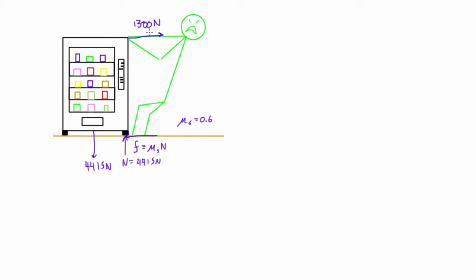In this case, our normal force — really the maximum normal force — would be 4415 newtons. Obviously if this force isn't big enough to cause tipping, we'll still get some force on both sides. But we should solve for the worst case scenario, and if it doesn't tip, we know we're not worried about tipping. So we'll solve for the moments about point A.